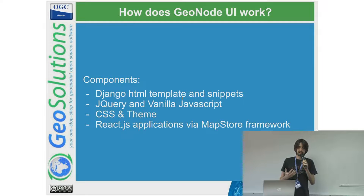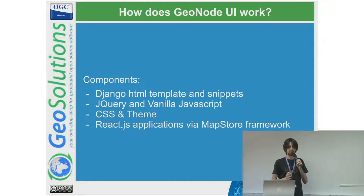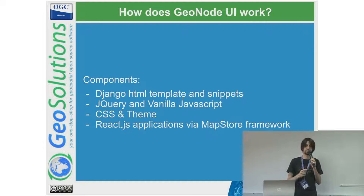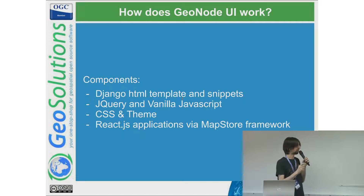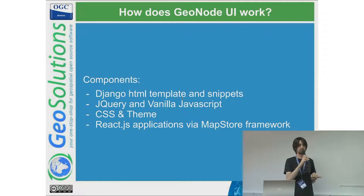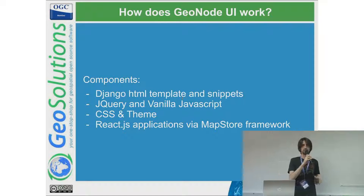We have tried to list what these pieces are. The Django template snippets are small HTML fragments that can easily be overridden through a GeoNode project. If you have a project, you can override a component and replace, for example, the hero section or the footer without touching the core — because one aim of this new implementation was to avoid forking the main repository too much, and to allow maximum customization through the GeoNode project.